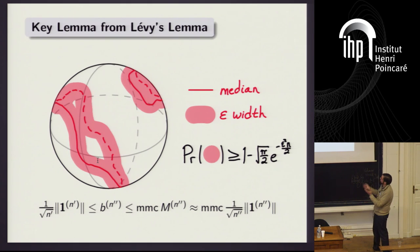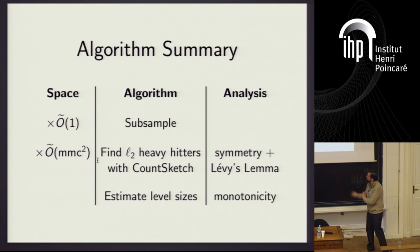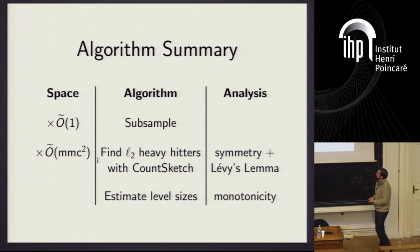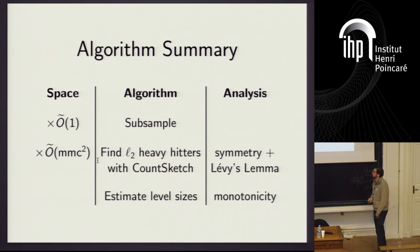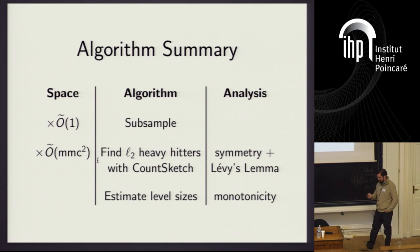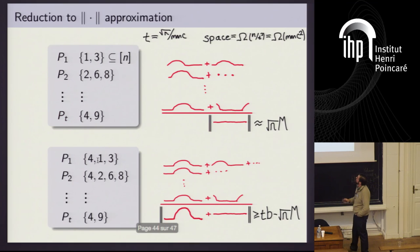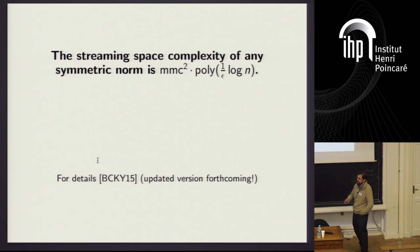Overall, here's how the algorithm works: we do subsampling (adding a log n or log-squared n factor to the space), and we compute a count sketch. Each count sketch requires MMC-squared bits, so the total space is MMC-squared times some polylog factor. The lower bound is a reduction from the multi-party disjointness problem. That's the streaming complexity for any symmetric norm — thanks for your attention.